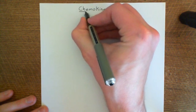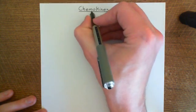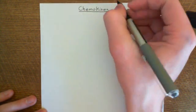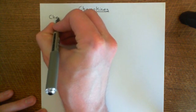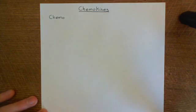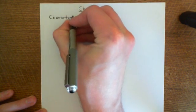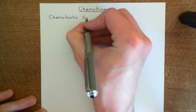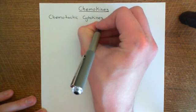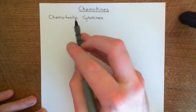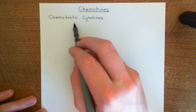So, chemokines. Firstly, let's start off with what chemokine actually means — where is the origin of the name chemokine? Well, basically, it is short for chemoattractive, or also chemotactic. I'll use chemotactic cytokines. A cytokine is a signaling molecule between two cells. Chemotactic means that it's going to attract cells towards it, basically.